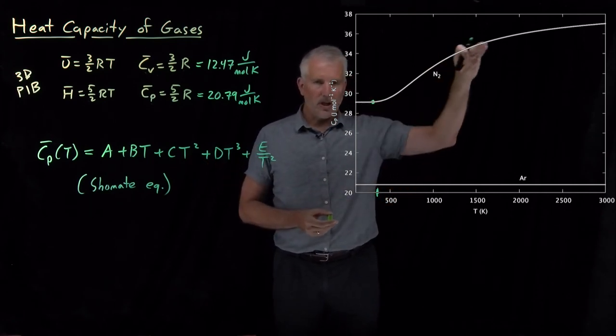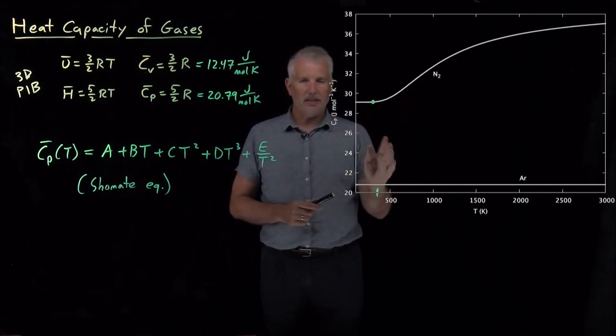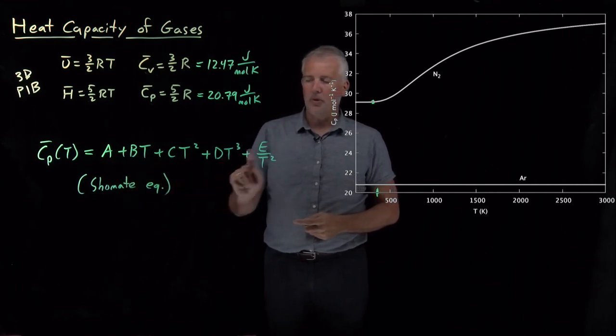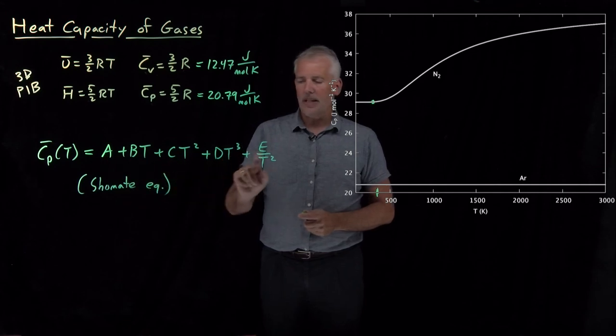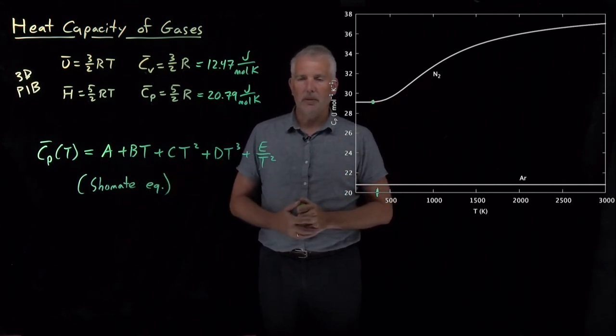That allows us to do a pretty good job of predicting the variation in the heat capacity as the temperature goes on at the cost of, however, having these five empirical parameters. So we could look up the values of A and B and C and D and E for a gas like nitrogen and use that equation to predict the heat capacity. And sometimes we'll have occasion to do that.